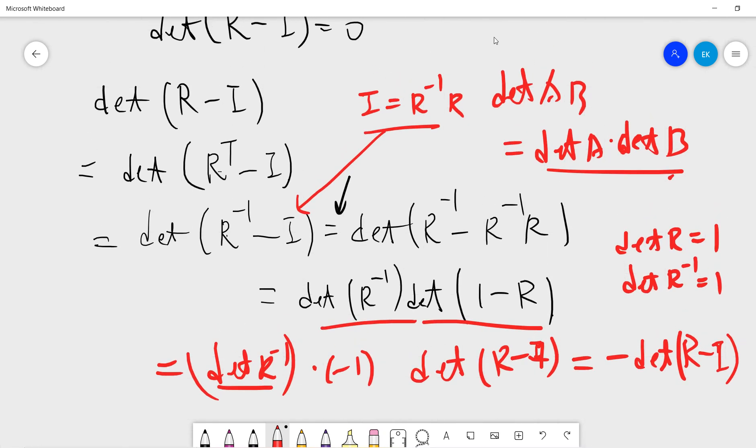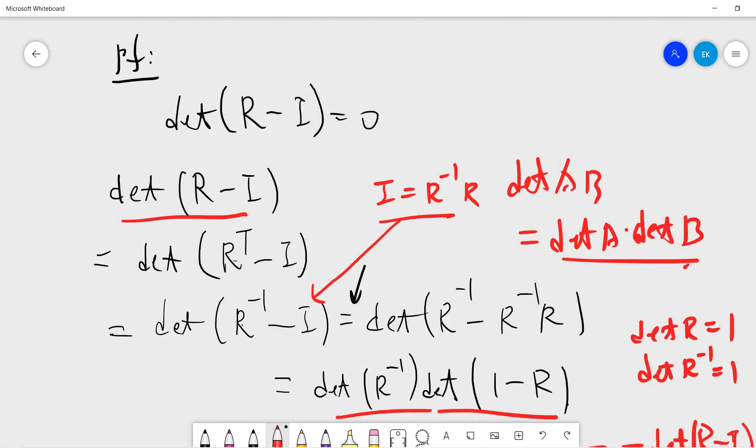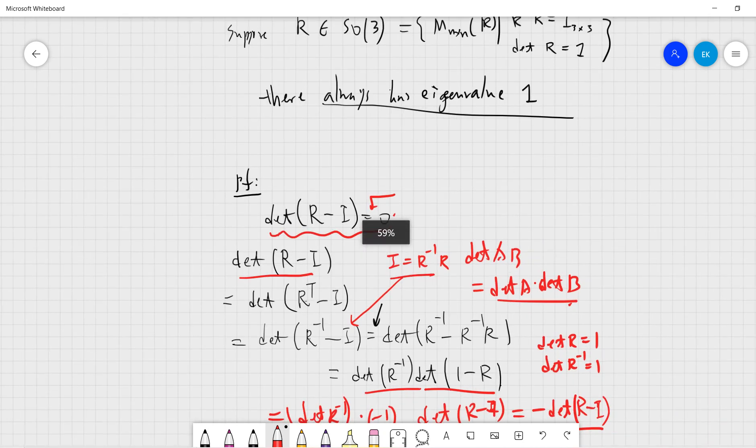So which gives you this. We prove that the determinant of R minus one is zero. That's it.